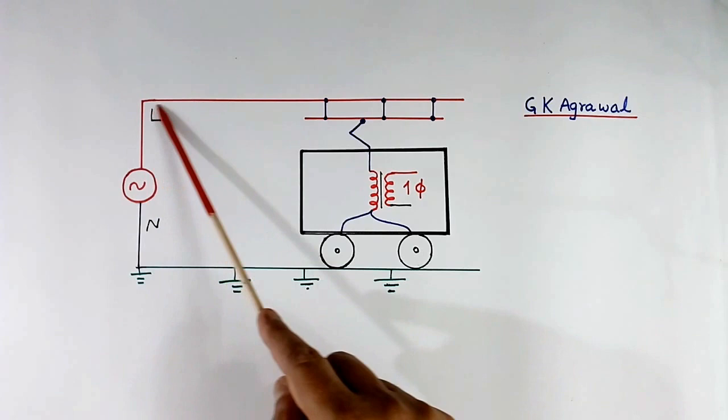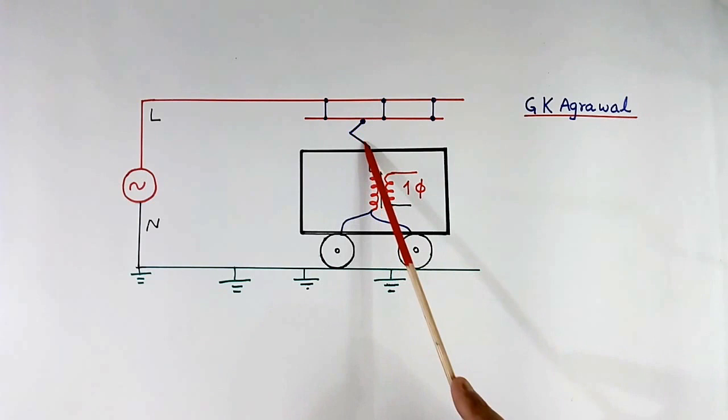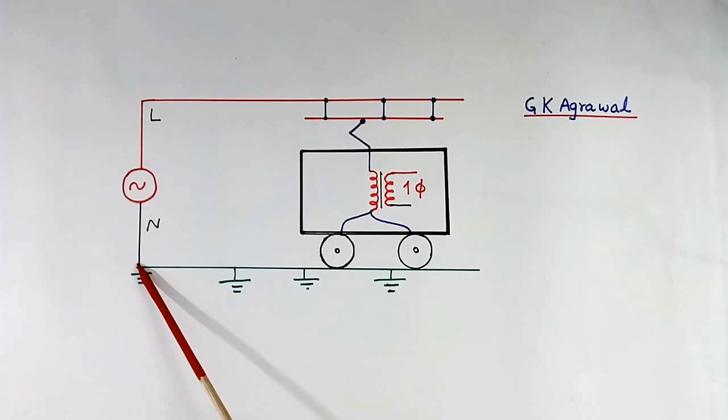Current will flow like this. First line. Then hanging wire. Then pantograph. Then primary of step down transformer. Then wheel. Then track. And are connected in parallel. So circuit completes.